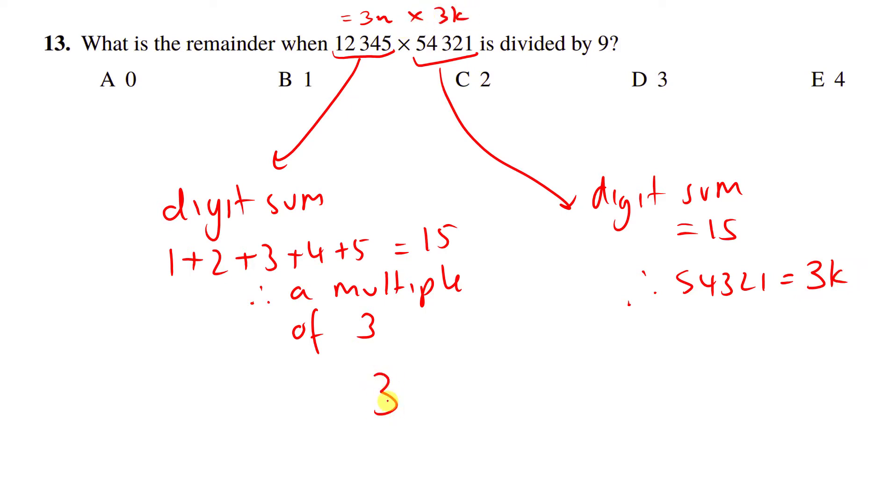And when I multiply two multiples of three, I get a multiple of nine. And when a multiple of nine is divided by nine, we just get a remainder of zero.